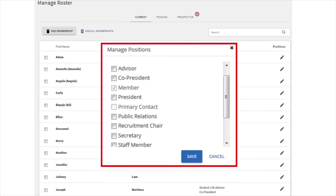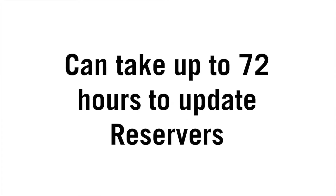An important position to consider is called Reserver. There is a Reserver 1 and a Reserver 2 title that can be chosen. These are the two individuals that have access to reserving rooms and accessing insurance for large events. Since you can hold multiple positions, it's likely that your Reservers will also be President, Vice President, etc. Once you change Reservers, it can take up to 72 hours to refresh in the room reservation site, so be patient. We have a separate video specifically on event planning and room reservations that goes into that in more depth.